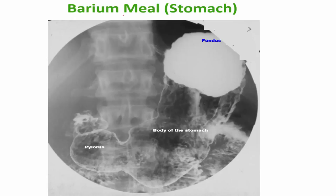Then we can use barium, or what is called the barium meal, to visualize the stomach. This is the outline of the stomach, so any abnormality can be shown here as a defect.